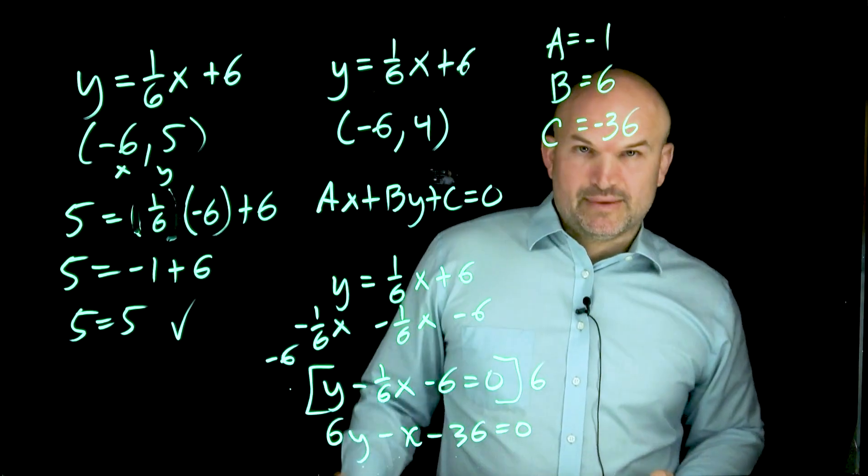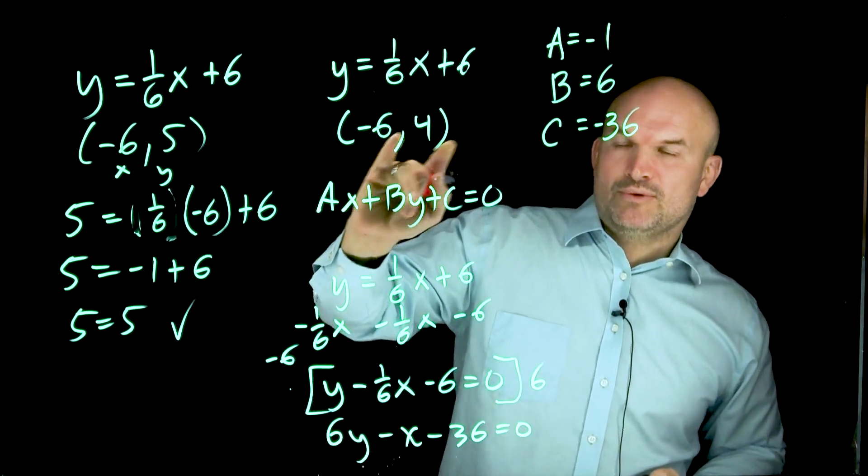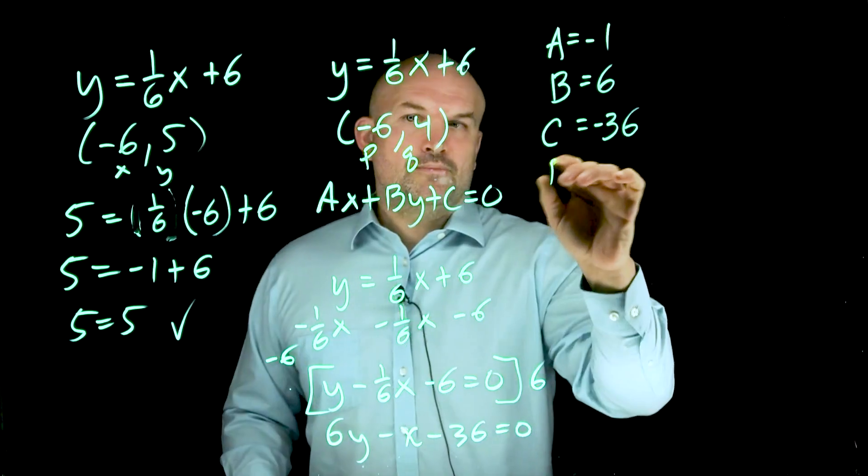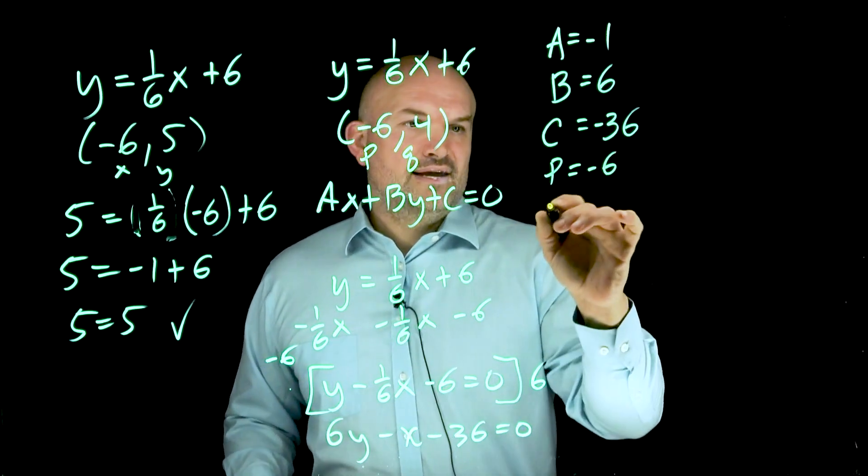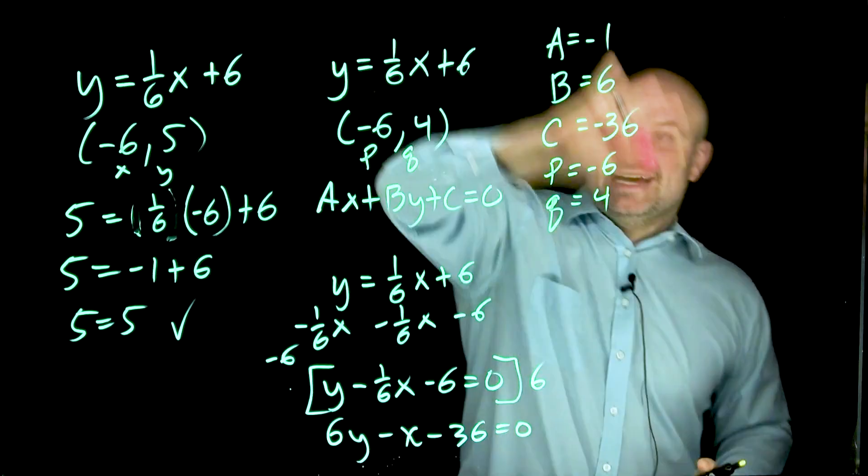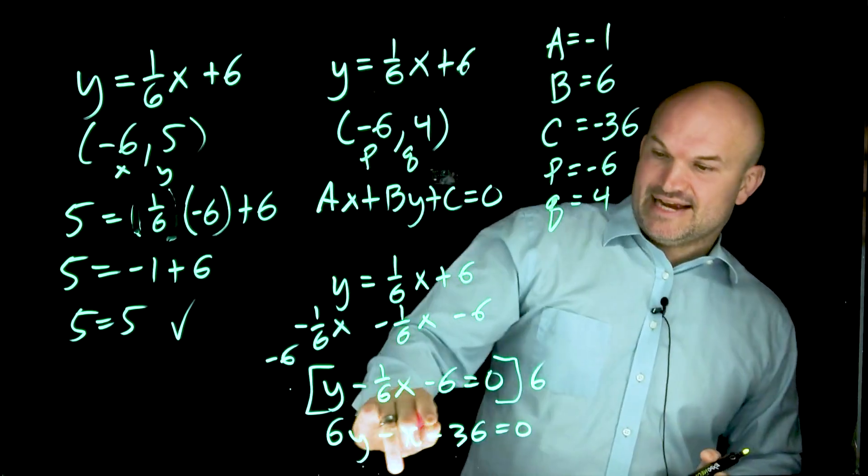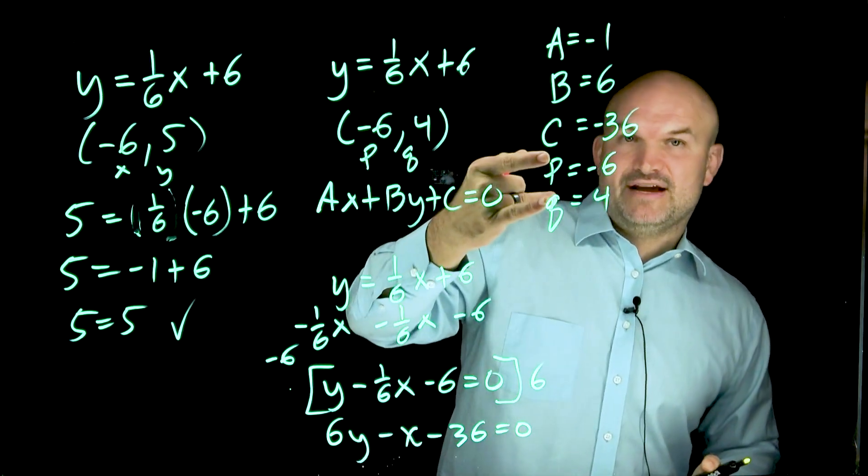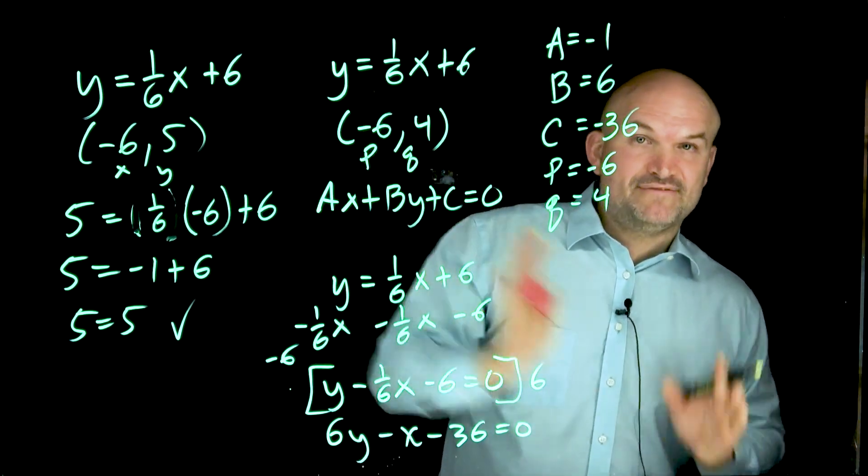Now the next piece of information is I need to identify these points, but we're not going to use X and Y. What we're going to use for this formula is P and Q. So P equals negative six and Q equals positive four. So once I've identified my ABC from the standard form, make sure it's in that form, right? Don't use this, you've got to use that. And I've identified my PQ, which is the point I want to find the distance from.